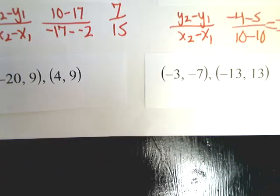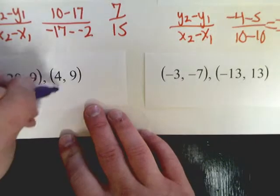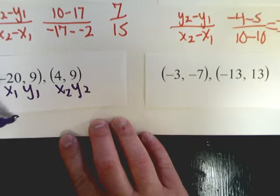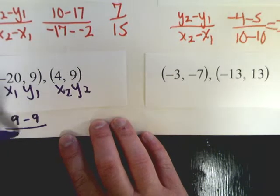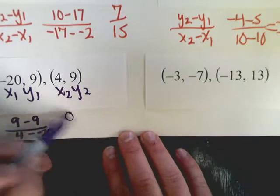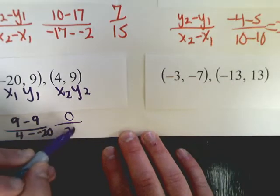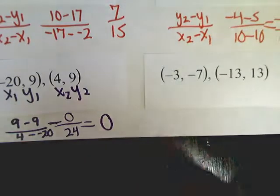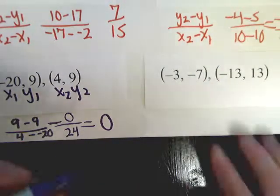Down here, y sub 2 minus y sub 1 over x sub 2 minus x sub 1. In this case, I'll end up with 0 over 24. Which, if you divide 0 by anything, you get a slope of 0. So, that works out perfectly fine. And the last one.